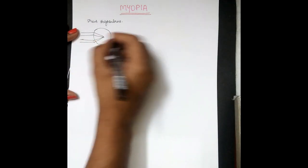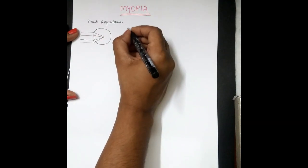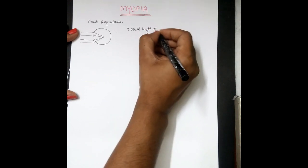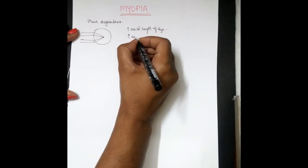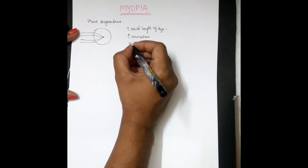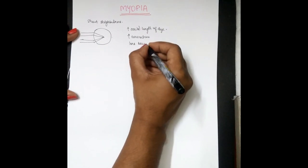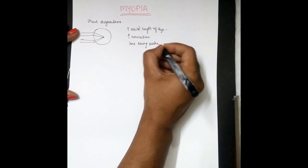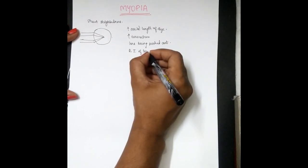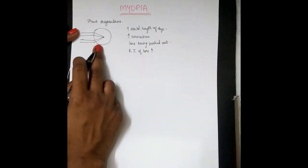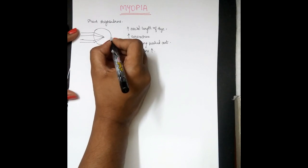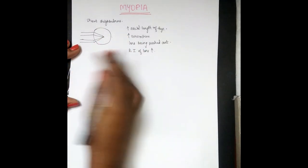Myopia can happen due to various reasons. It can be due to increased axial length of the eye, or increased curvature of the refractive surface. It can also happen due to the position of the lens being pushed anteriorly, or if the refractive index of the lens increases — the converging power increases and the point of convergence is in front of the retina rather than on it.